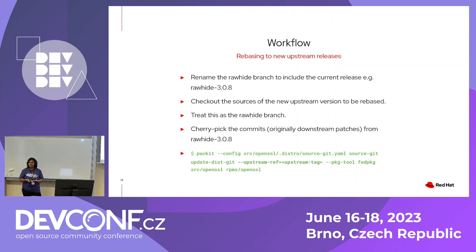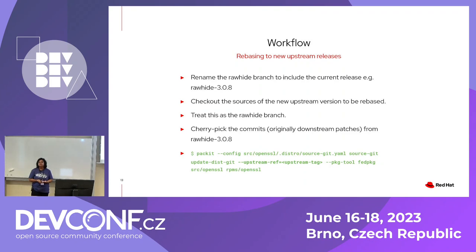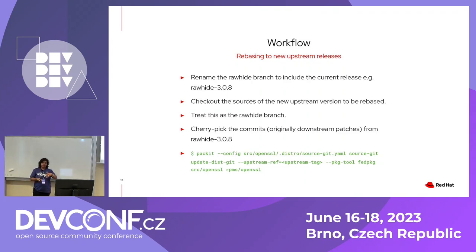For rebasing to newer upstream releases, there are slight modifications. You will have your Rawhide branch — treat the current state as a tagged branch called Rawhide-3.0.8, because now you'll have a new Rawhide tracking the new upstream release. Then cherry pick all the commits that existed on your previous Rawhide 3.0.8 version. You will face merge conflicts that need to be manually fixed, as you would have done using patches too. Then if you run an update command you'll see the patches on distgit. Just be careful to use the upstream ref tag so that git history is tracked from the latest version — in our case, the latest version we want to put in Fedora is 3.1.1.